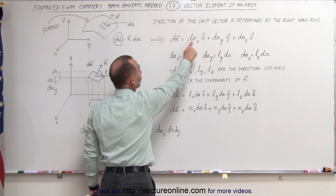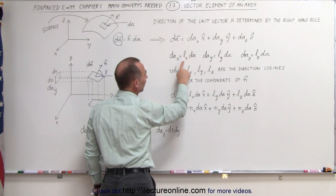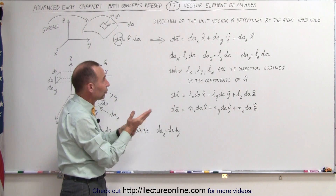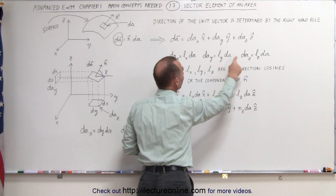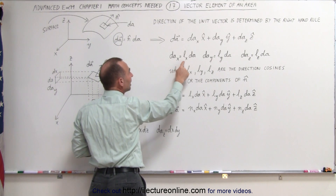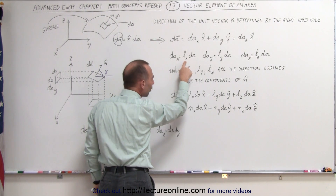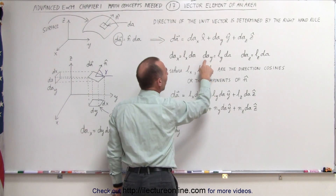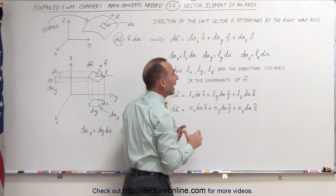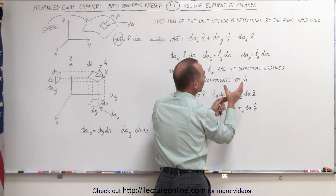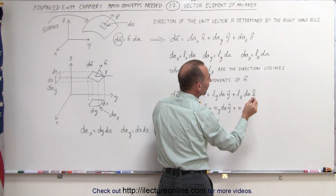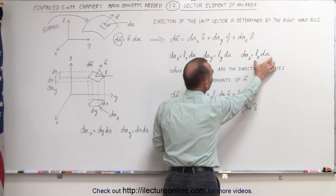We can also express each of these projections in terms of what we call the direction cosines. If we let L sub x, L sub y, and L sub z be the direction cosines — from the unit vector to the x-axis, from the unit vector to the y-axis, and from the unit vector to the z-axis — these become the direction cosines. We can then express dA sub x, the projection onto the yz plane, as the direction cosine multiplied by the area dA. Similarly, dAy — the projection onto the xz plane — equals the direction cosine times dA, and dAz — the projection onto the xy plane — is the z component of the direction cosines, that is, the cosine of the angle between the unit vector and the z-axis.